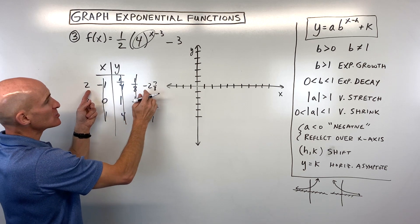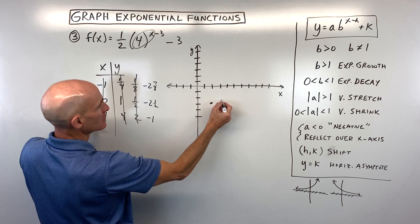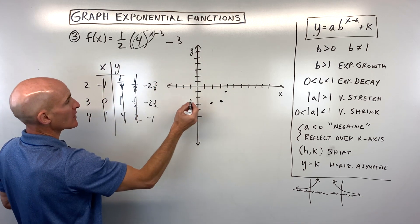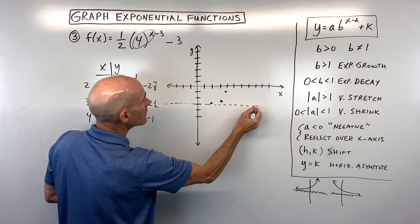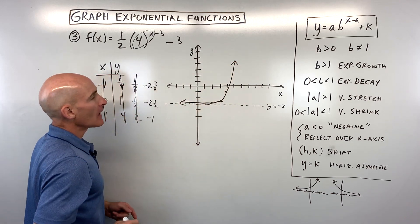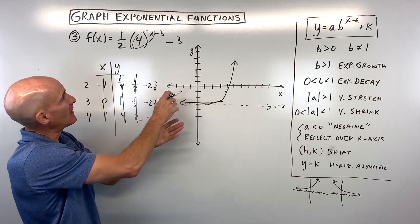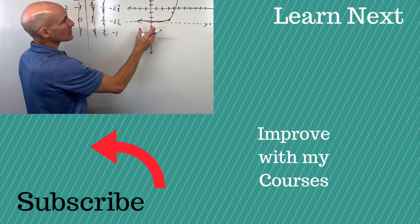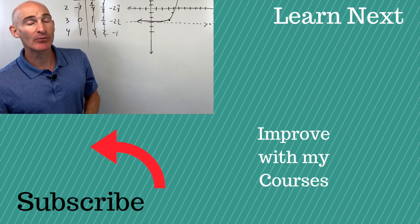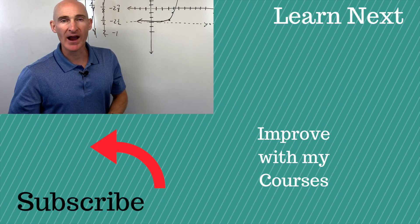Plotting those points: 2, negative 2 and 7 eighths; 3, negative 2 and 1 half; and 4, negative 1. We have a horizontal asymptote at y equals negative 3 — that's the k value. The graph is exponential growth because the base 4 is greater than 1. The 1 half was a vertical shrink, and we shifted it right 3 and down 3. The domain is all real numbers and the range is y greater than negative 3. Great job if you were able to follow these three examples — follow me to a previous video for more practice graphing exponential functions.